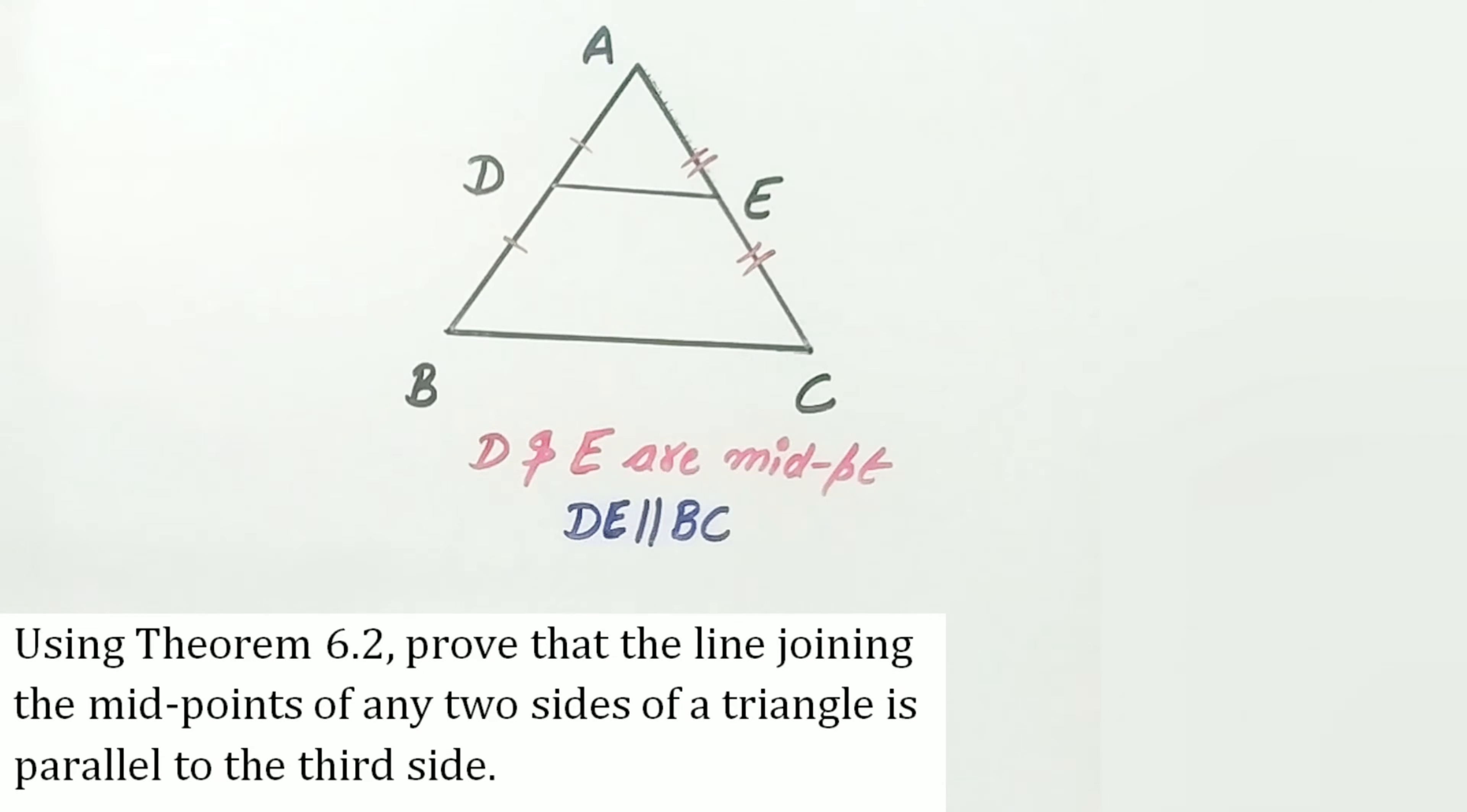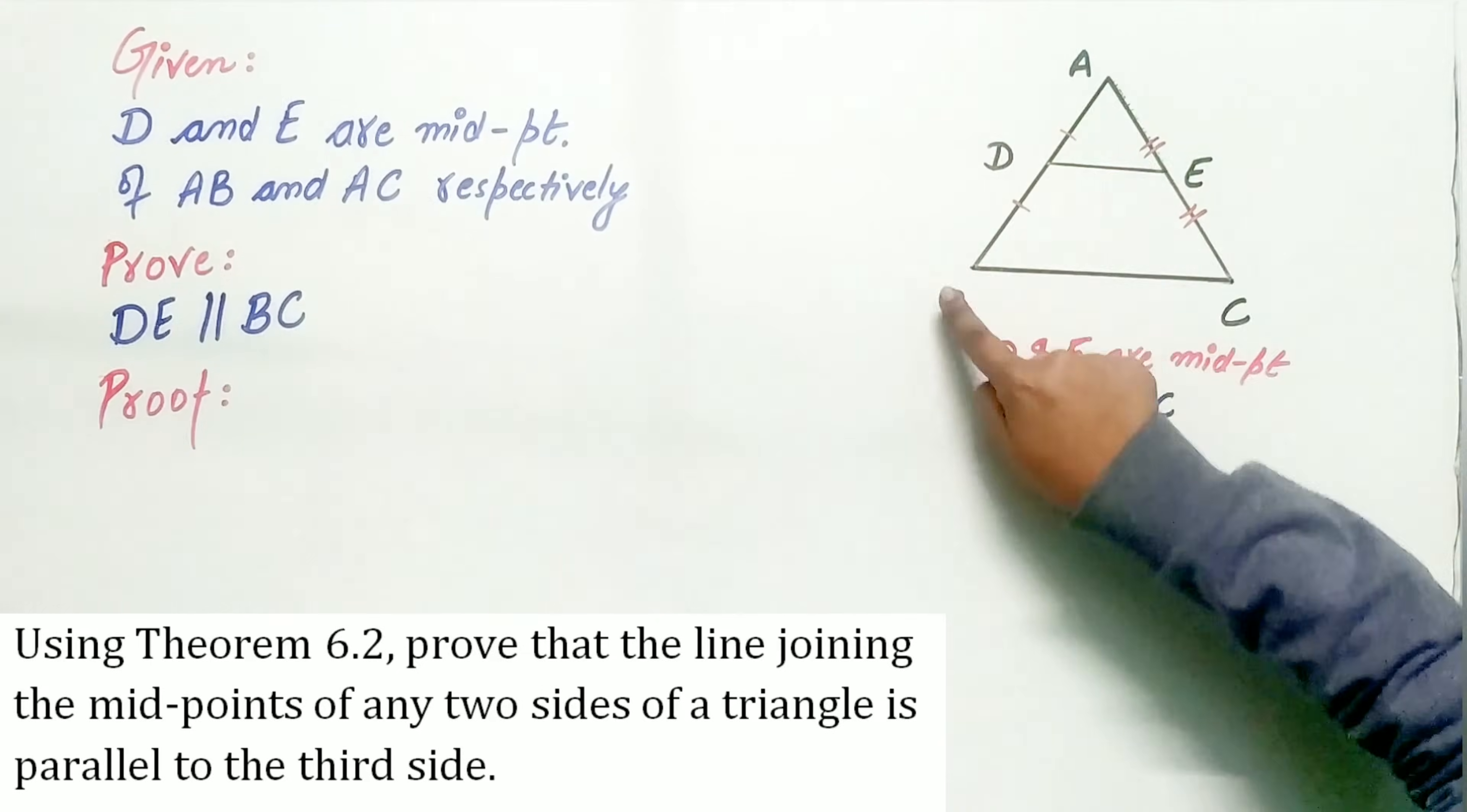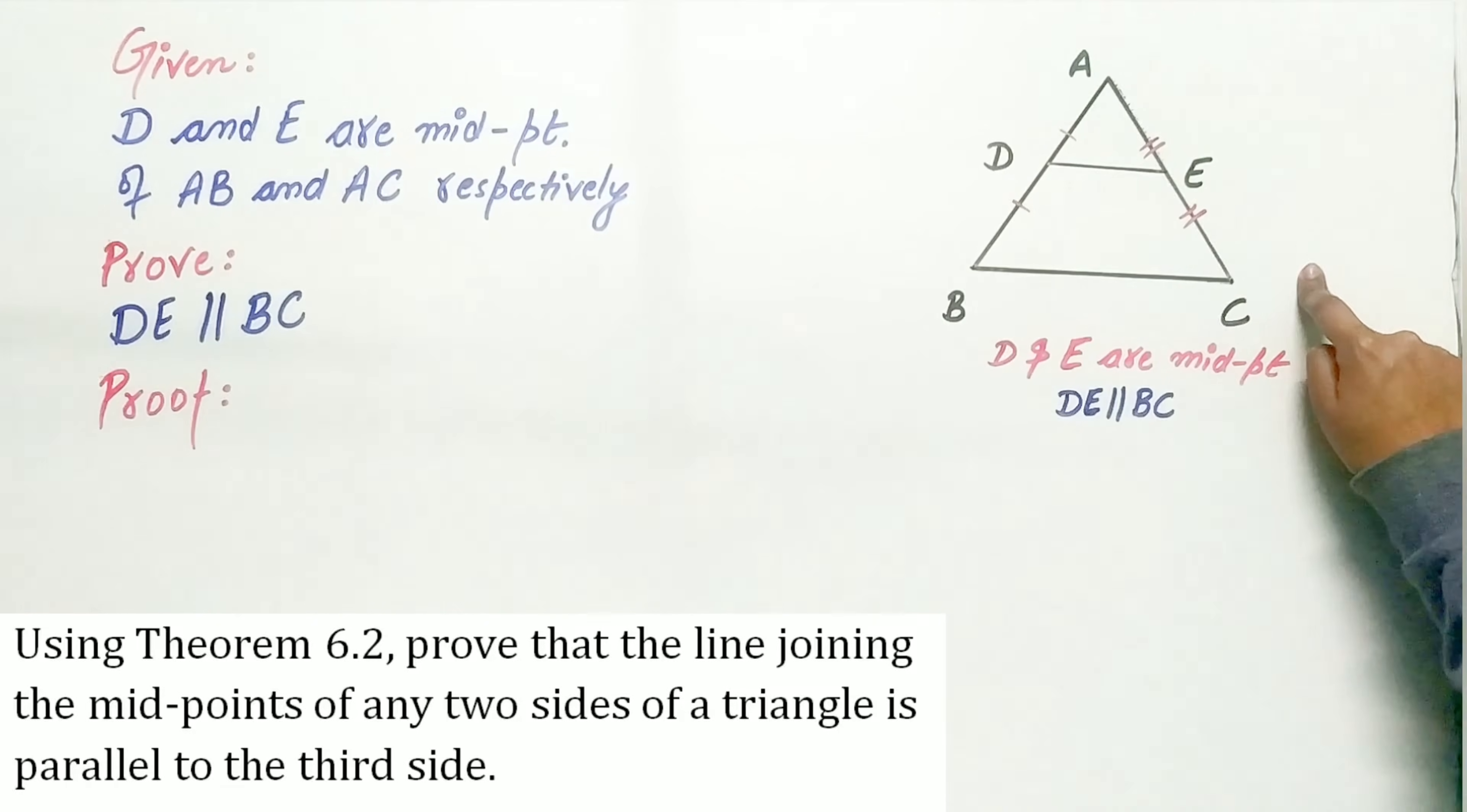Using theorem 6.2, prove that the line joining the midpoints of any two sides of a triangle is parallel to the third side.